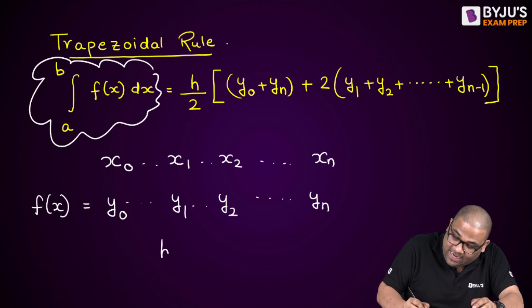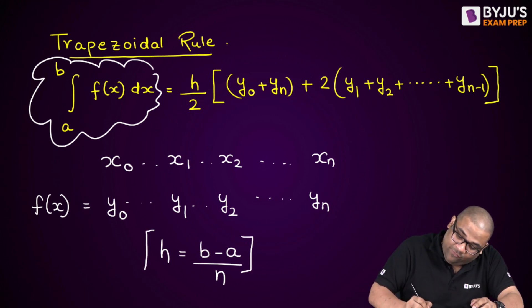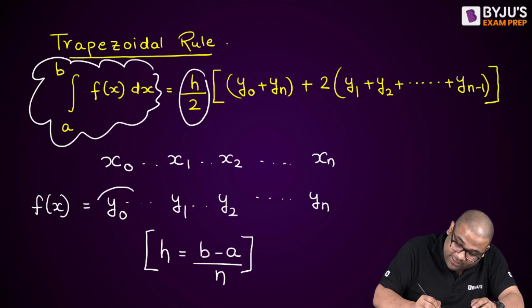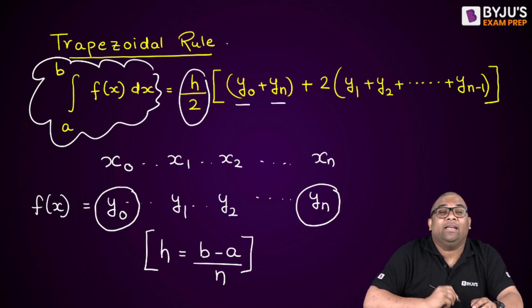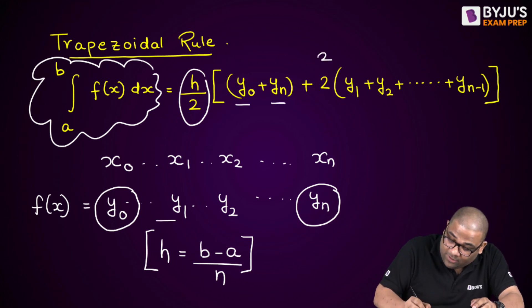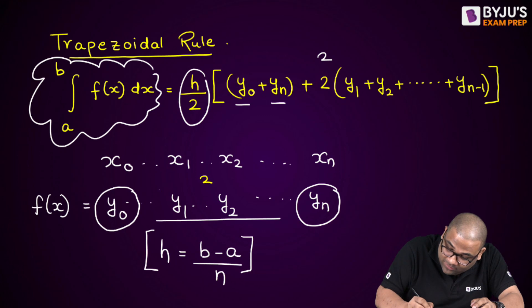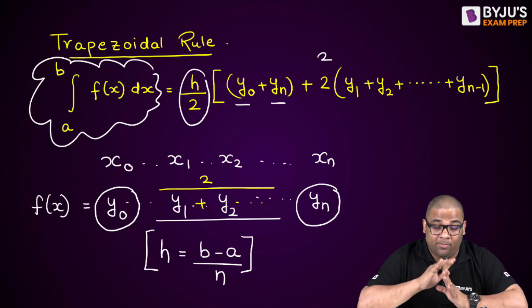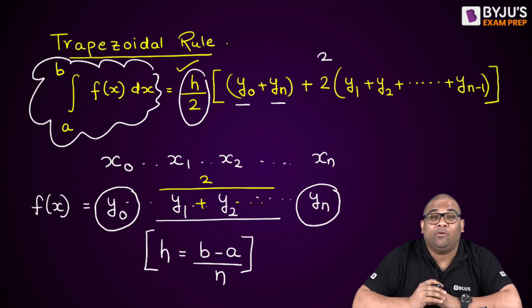The interval h is equal to (b minus a) divided by n. The formula is h/2, then y₀ plus yₙ — the first and last values — plus two times the rest of the remaining values. So: h/2 × [y₀ + yₙ + 2(y₁ + y₂ + ... + yₙ₋₁)]. This gives the integration from the trapezoidal rule. Always remember to multiply by h/2.